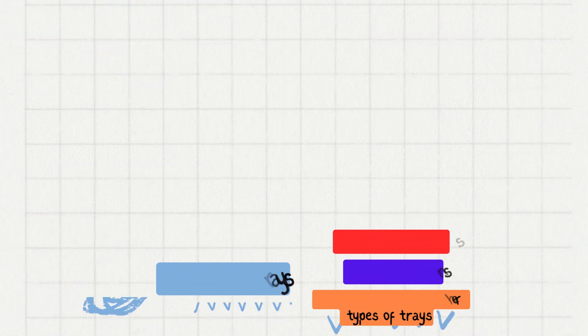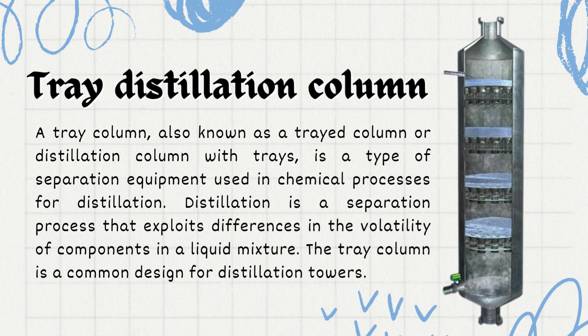First of all, what is a tray distillation column? Distillation is a widely used separation technique in chemical engineering. It capitalizes on the different boiling points of components in a liquid mixture to separate them. A distillation column is a vertical vessel used for distillation. It consists of various components including a reboiler at the bottom and a condenser at the top. The term 'tray column' refers to the inclusion of trays within the column — horizontal platforms placed at intervals along the column's height.